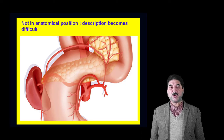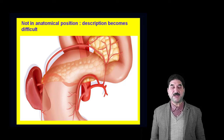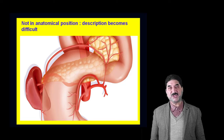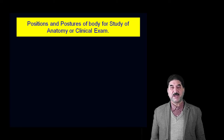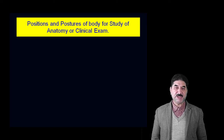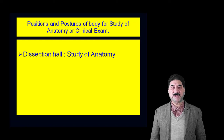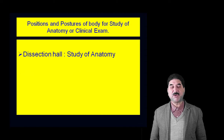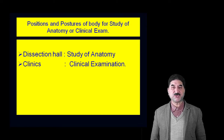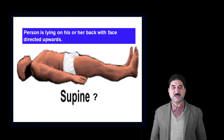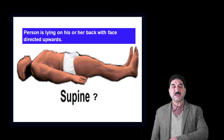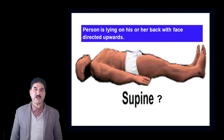What are the various positions and postures of the body in anatomy? In anatomy or in clinical examination in the dissection hall, the anatomical position is used to study anatomy. In clinics, these positions are used for clinical examination. In theaters, the patient is kept in various positions or postures for performing surgical procedures. In the supine position, a person is lying on their back with the face directed upwards.